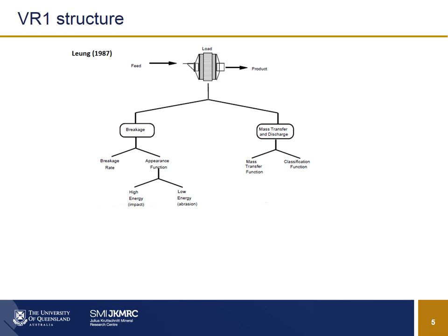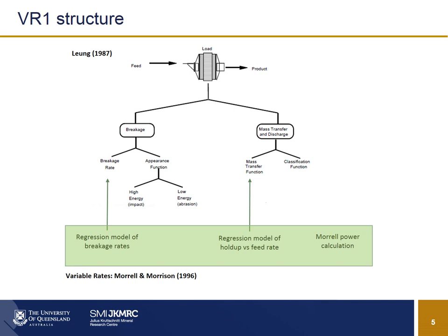I dream that we could get our models into the halfway situation where they'd be at least semi-empirical, but a lot of our models are still somewhere between empirical and semi-empirical. The VR1 structure is based on Leong's model, which has a population balance that converts the feed into a product and calculates the load. It has two main parts: a mass transfer and discharge function, and a breakage function. Overlaid on top of that is a variable rates model developed by Steve Morell and Rob Morrison about 20 years ago.